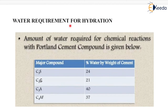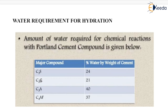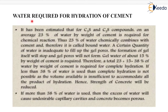Now, water requirement for hydration. The amount of water required for chemical reactions with Portland cement compounds is given below. The major compounds of cement and the percentage water by weight of cement are: for C3S, 24%; for C2S, 21%; for C3A, 40%; and for C4AF, 37%. It has been estimated that for C3S and C2S compounds, on an average, 23% of water by weight of cement is required for chemical reaction.